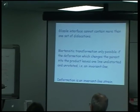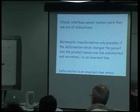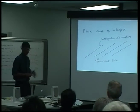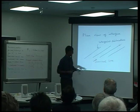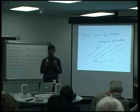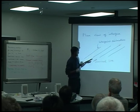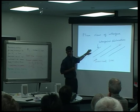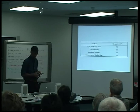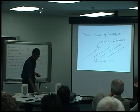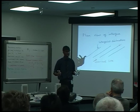To summarize: a glissile interface cannot contain more than one set of dislocations. Martensitic transformation is only possible if the deformation leaves a single line undistorted and unrotated — an invariant line. The deformation that carries the parent phase into the product phase must, as a minimum condition, be an invariant line strain. We haven't yet solved why the habit plane is irrational or why the orientation relationship is irrational. Looking at the boundary between austenite and martensite in plan view by transmission electron microscopy, you see just one set of dislocations — confirming the invariant line condition.